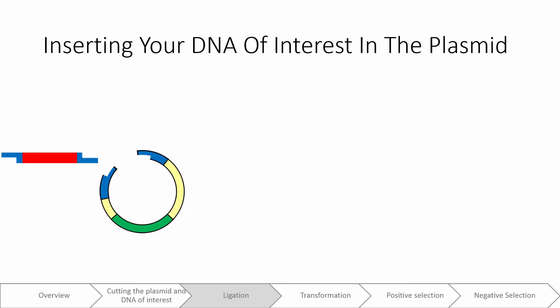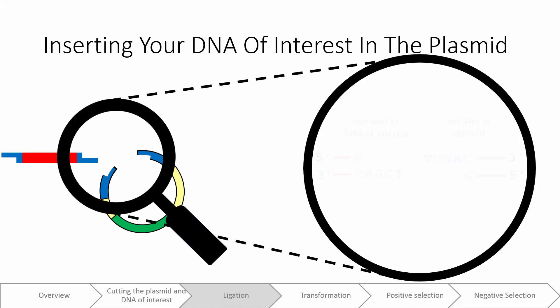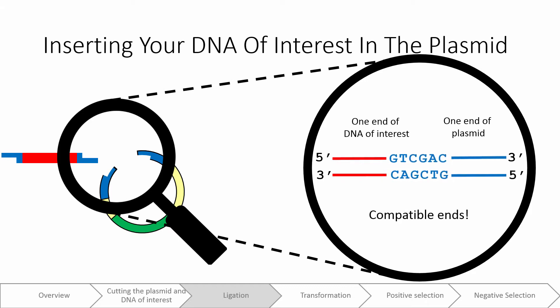If we took a zoomed in look, you would notice that our DNA of interest and your plasmid will have compatible ends. This will always happen when you cut both with the same restriction endonuclease. We could use different restriction enzymes in a more complicated setup, but I'll save that for another video.